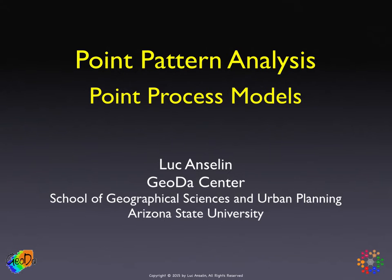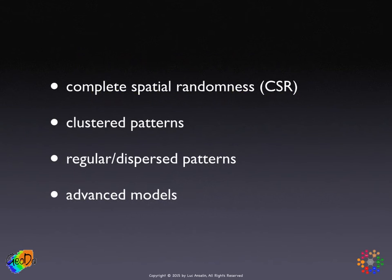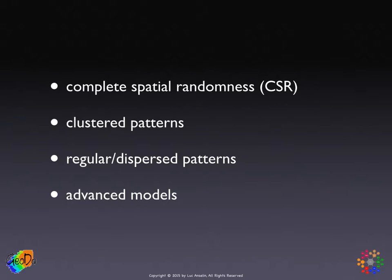In this part, we'll first start with a formal specification of what we mean by complete spatial randomness — the frame of reference, the null hypothesis. And then we'll look at some alternative hypotheses, just as we did when we discussed spatial autocorrelation. We had the null hypothesis of spatial randomness and then the alternative of positive and negative spatial autocorrelation.